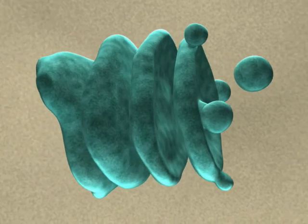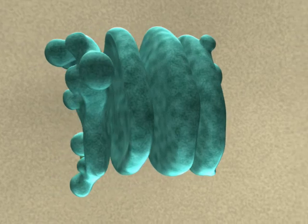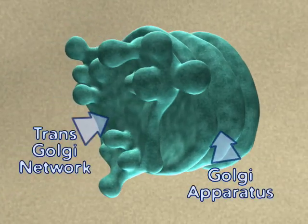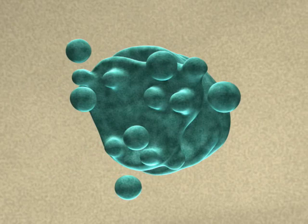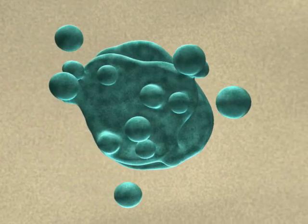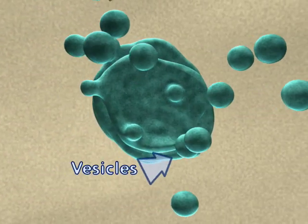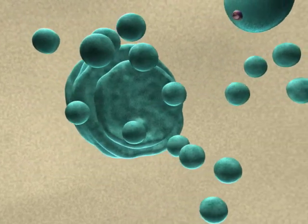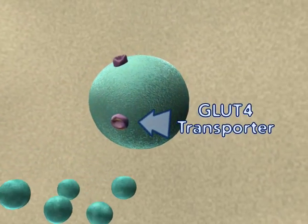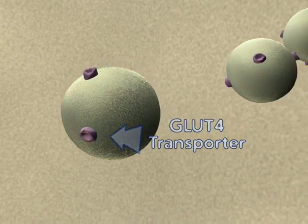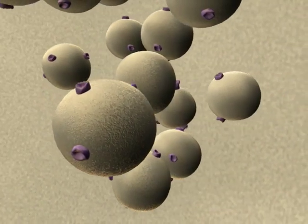As illustrated in the protein trafficking animation, many proteins are processed through the Golgi apparatus and the trans-Golgi network and eventually stored in vesicles. The vesicles are membrane-bound cargo vessels that can move to different cellular locations. Here we focus on glucose transporter 4, again GLUT4, the main protein through which glucose moves into the cell in humans.